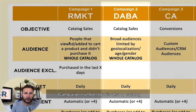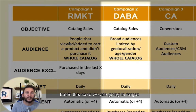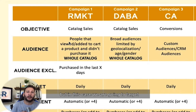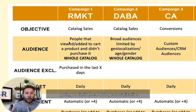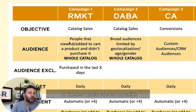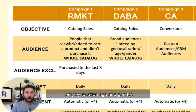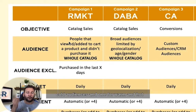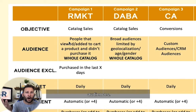Campaign number two is also a catalog, but in this case we are going to target broad or cold audiences. We are only going to limit them by geolocation, gender, and age, but we are going to show them the whole catalog — no interests whatsoever, no lookalike audiences. It's a broad audience limited only by location, age, and gender, and it will again be cold audiences. So we now have two catalogs: one for cold audiences and one for warm and hot audiences.